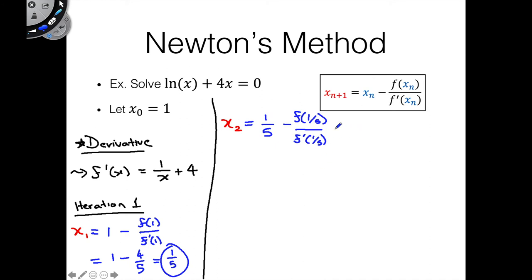I'm running a little short of space here, but we'll have 1/5 minus, if we plug in 1/5 into this, we will have ln(1/5) + 4/5. If we plug in 1/5 into the derivative, we're simply going to get 5 + 4, which will be 9, because 1 over 1/5 is just 5, 5 + 4 is 9.